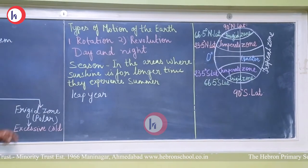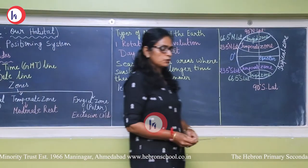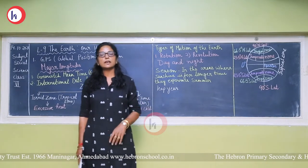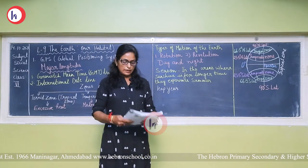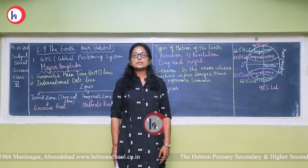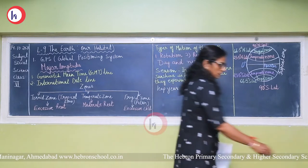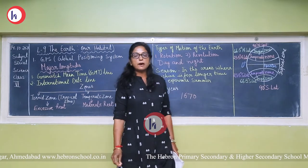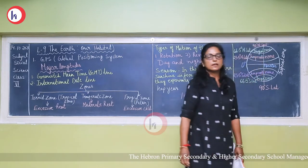Next topic is types of motion of the earth: Rotation and Revolution. What is rotation? Just as a top rotates on its axis, in the same way the earth also rotates on its axis from west to east. This circular motion of the earth is called daily motion or rotation. The earth completes one rotation at 1670 kilometers per hour at the equator, and it takes 24 hours to complete this rotation.